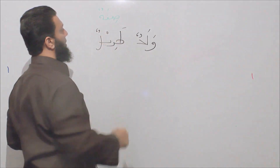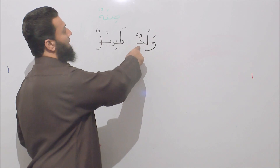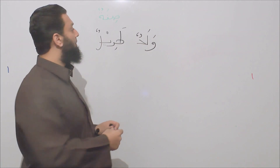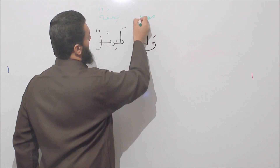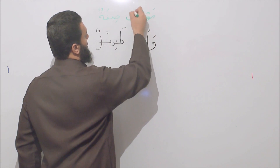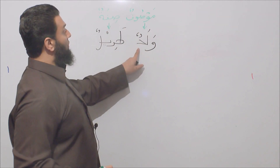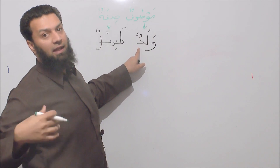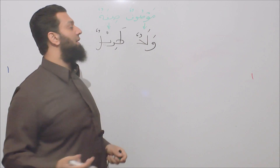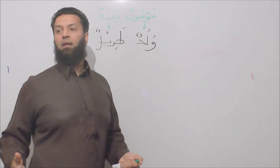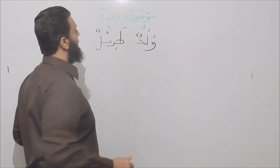The sifatun describes waladun, making it 'a tall boy.' In Arabic grammar, the word being described — waladun — is called mawsufun. So we have a mawsufun, which is the word that has been described, and the sifatun, which is the word doing the describing. Together they make the phrase more interesting, as the sifatun gives a description of waladun.